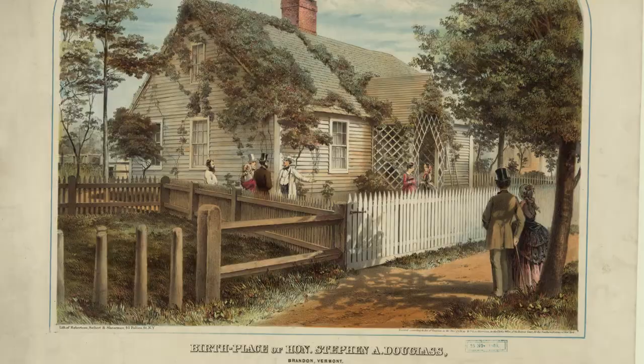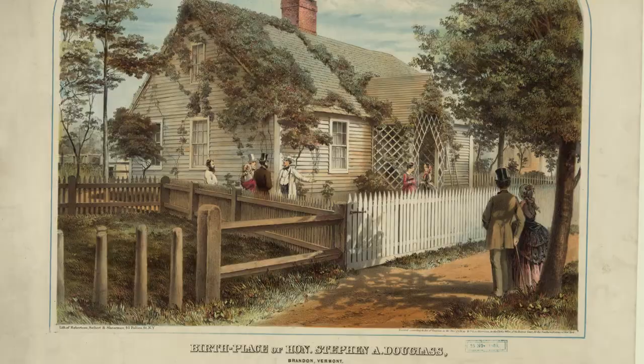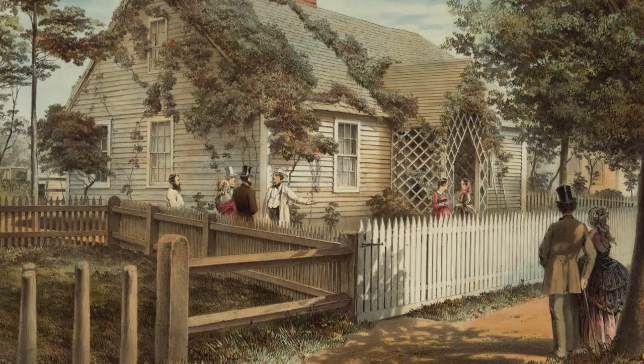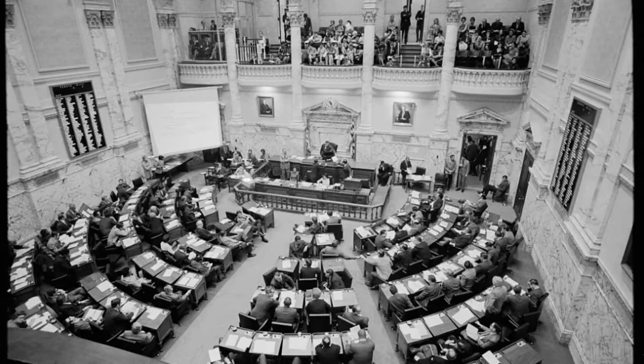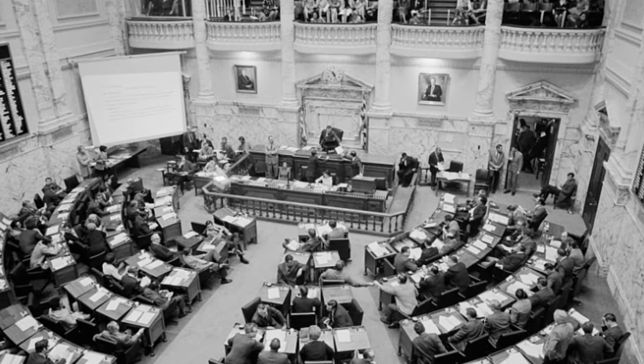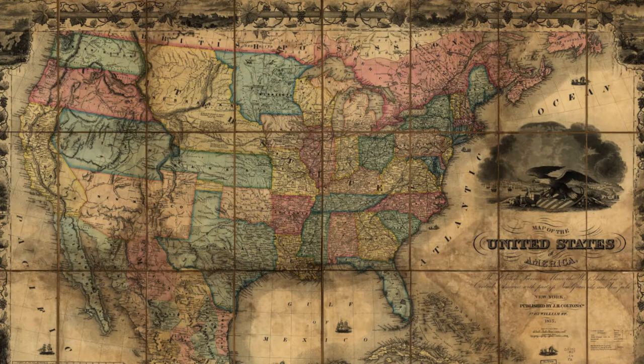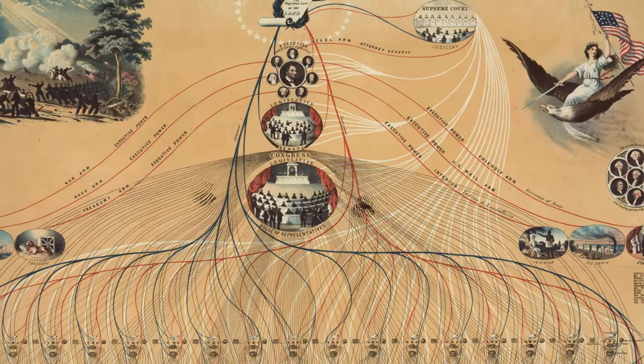Lincoln was born in 1809 in Kentucky, and his father was a farmer. Lincoln gained experience in government, having served four terms in the state legislature in Illinois. While serving in the state legislature, he studied law and received his license to practice in 1836.